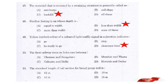Question: The first railway train in India ran between which stations? Answer: Option B — Mumbai and Thane. The first railway train in India ran between Mumbai and Thane.